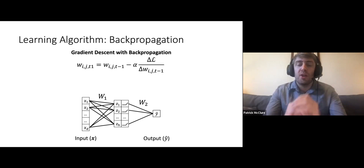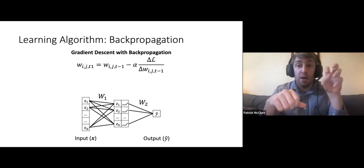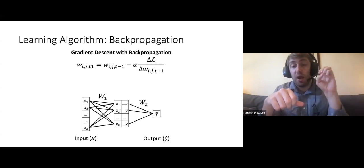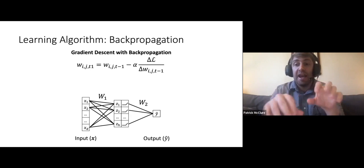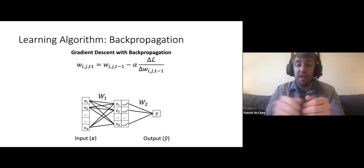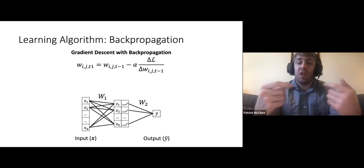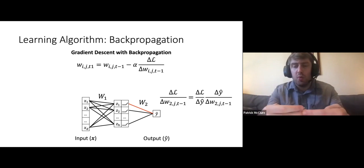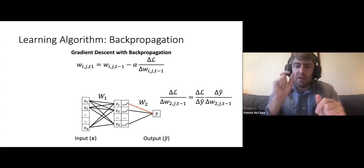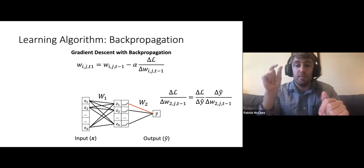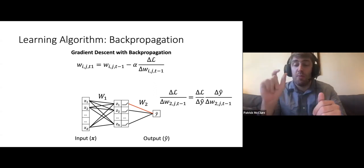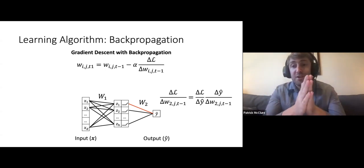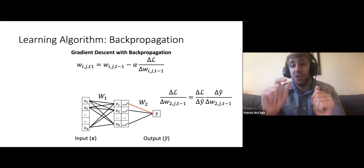We have two groups of weights: group one goes from inputs to hidden layer units, and group two goes from hidden layer units to our regression prediction. To find how changing a group two weight changes our prediction, this is very similar to the chain rule for a linear model — we ask how changing the prediction changes the loss, and how changing the parameter changes the prediction. In this case, what changes the prediction is the corresponding hidden unit activation value, not the raw input dimension value.